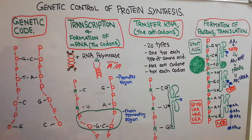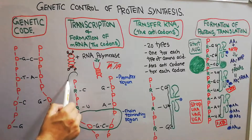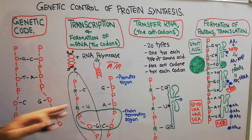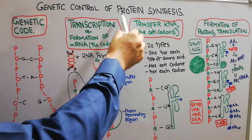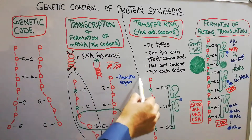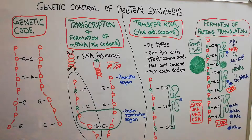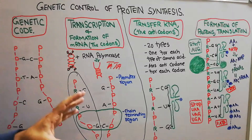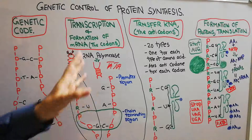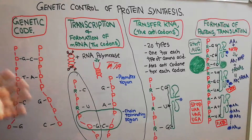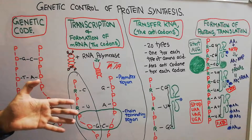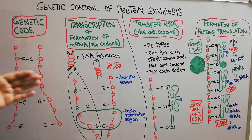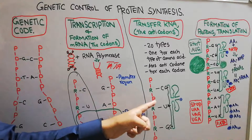Once the messenger RNA has been formed — at this stage it is called pre-messenger RNA — some changes occur. It has units like exons and introns: exons determine a genetic sequence but introns do not. A process known as splicing occurs and makes changes in the messenger RNA so that it can code for more than one protein. From here the messenger RNA exits the nucleus.